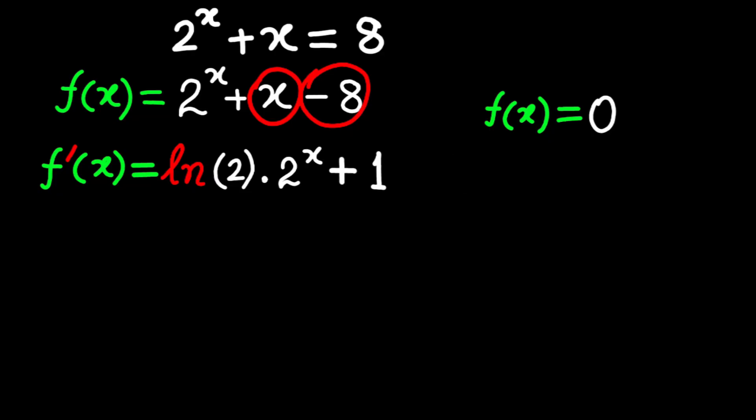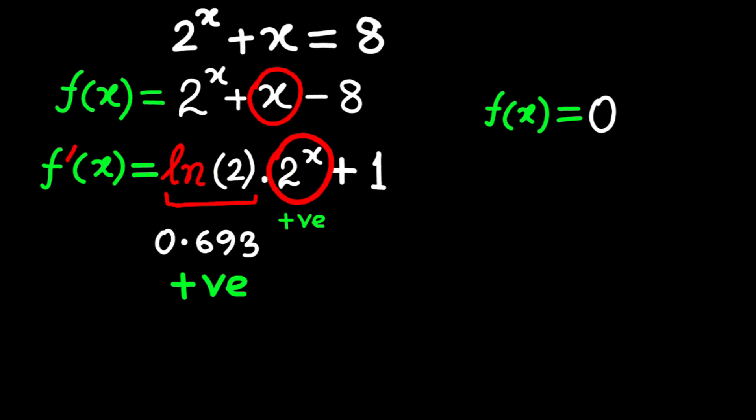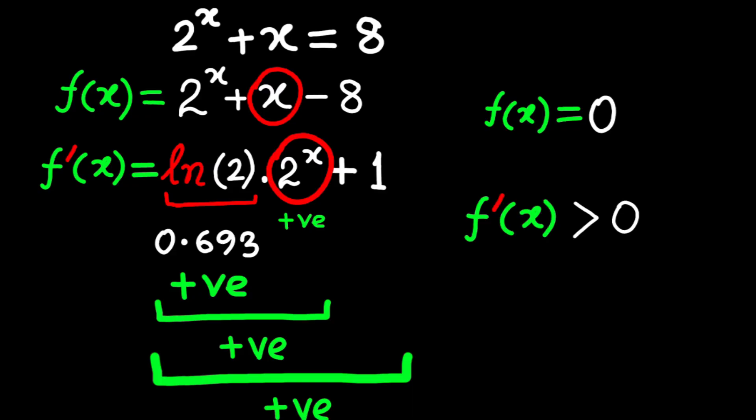Now let's think about this derivative. The number natural log of 2 is about 0.693, which is positive. And 2 to the power x is always positive for any real x. Whether x is big, small, positive, negative, doesn't matter. 2 to the power x is never 0 or negative. So natural log of 2 times 2 to the power x is positive, and then we add 1, which makes f prime of x even more positive. That means f prime of x is greater than 0 for every single real number x.